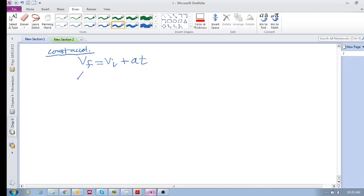Then we had x final is x initial plus velocity initial times time plus half a t squared. And then we also had v final squared is v initial squared plus 2 acceleration times delta x. So we had these three guys. They're all based on constant acceleration.